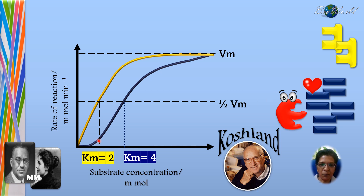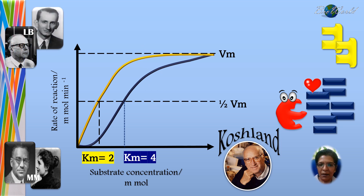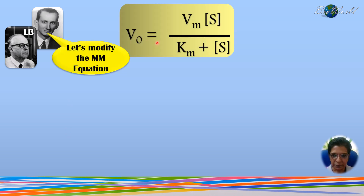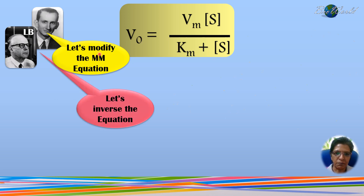The problem with the Michaelis-Menten curve is that when we draw curves, different individuals may draw it differently, meaning the Km values obtained may appear different. This was the problem that Lineweaver and Burk had with the Michaelis-Menten curve. Their solution was to modify the Michaelis-Menten equation by inversing it. In biology this equation is provided, but no harm in memorizing it.